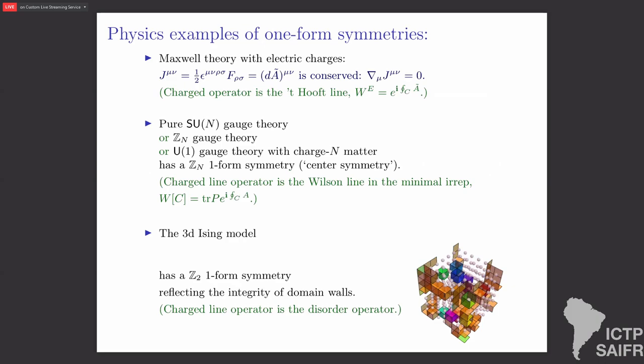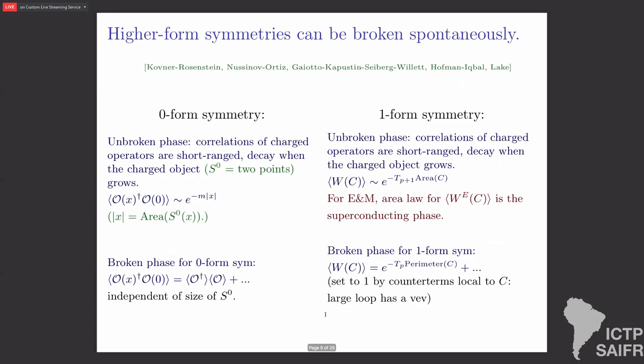Some physics contexts where such a symmetry arises are ordinary E&M, where in the absence of magnetic monopoles the magnetic flux lines can't end — the charged line operator is the 't Hooft line. Many gauge theories without fundamental matter enjoy a one-form center symmetry — discrete center symmetry — under which the charged line operator is the Wilson line. And the ordinary 3D Ising model has a Z2 one-form symmetry, which reflects the integrity of the non-spins, and the line operator is the disorder operator. So anything we can do with ordinary symmetries, we can do with generalized symmetries — in particular, they can be spontaneously broken.